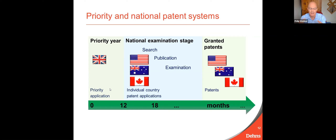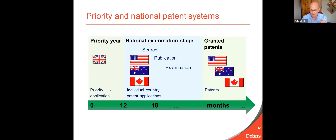They will be applying the same novelty and inventive step rules, with slight variations from country to country. They'll also consider other criteria: have you got enough information in your patent application, and are your patent claims clear enough? They will examine each of those criteria independently in each country, and then hopefully you'll get patents granted. That's the basic principle, but I'll talk about some of the variations in just a second.